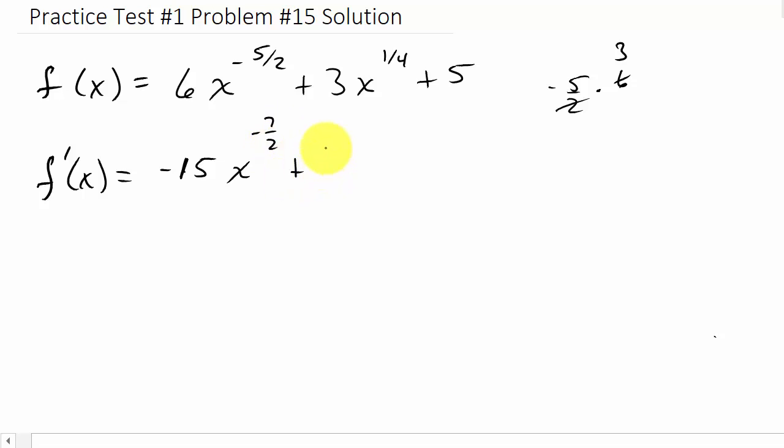Plus, and then we have 3 fourths. 1 fourth times 3. X subtract 1. 1 fourth minus 1. That's going to be negative 3 fourths. And then the derivative of 5 is just 0.